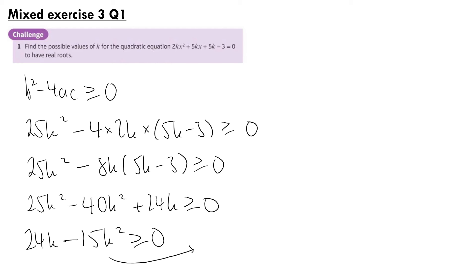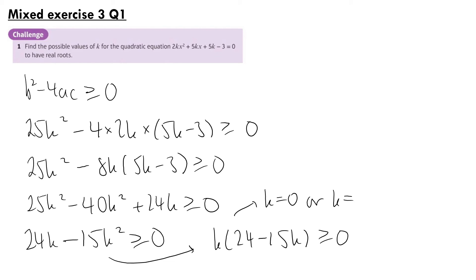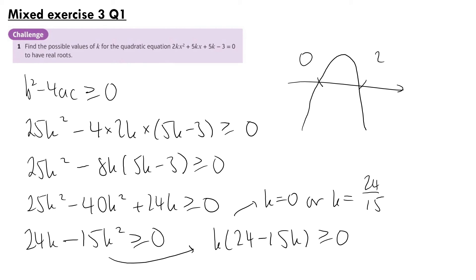So 24k minus 15k squared is greater than or equal to 0. Factorising: 3k(24 minus 15k) is greater than or equal to 0... wait, factorising as k(24 minus 15k) gives roots k equals 0 or k equals 24/15. Since this is a negative quadratic (n-shape), it is greater than or equal to 0 between the two roots. So the answer is 0 is less than or equal to k which is less than or equal to 24/15.